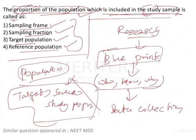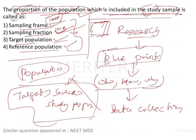Whenever you see 'proportion of population included in the study,' that is the sampling fraction. From the sampling frame, a fraction of people is selected — those are the sampling units. For example, if the sampling frame has a thousand people and the sampling fraction is 10%, the sampling units will be a hundred samples.